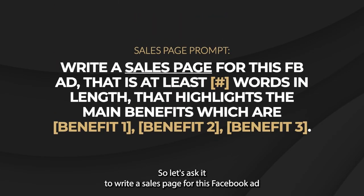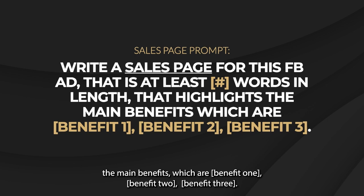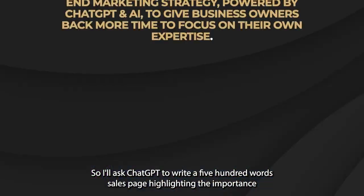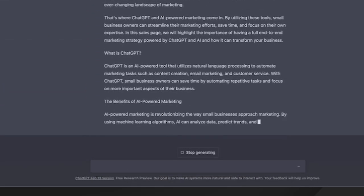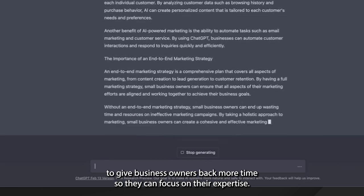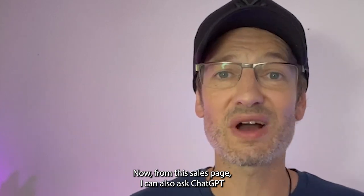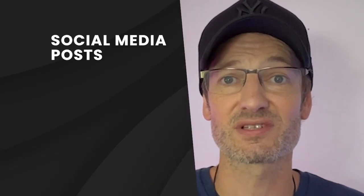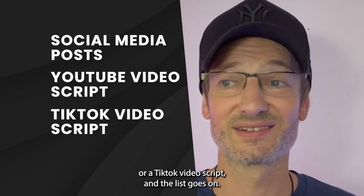So let's ask it to write a sales page for this Facebook ad that's at least a certain number of words in length and highlights the main benefits. I'll ask ChatGPT to write a 500-word sales page highlighting the importance of having a full end-to-end marketing strategy powered by ChatGPT and AI to give business owners back more time so they can focus on their expertise. From this sales page, I can also ask ChatGPT to turn it into smaller social media posts, a YouTube video script, or a TikTok video script.